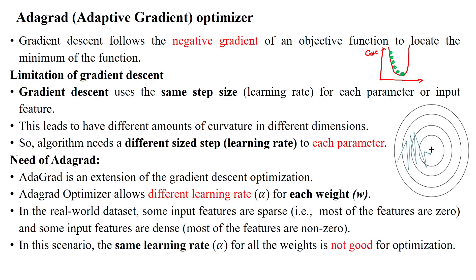AdaGrad, or Adaptive Gradient, is an extension of the gradient descent algorithm, which uses the negative gradient of an objective function to locate the global minimum. The global minimum gives you the minimum error for your cost function. The limitation of gradient descent is here.